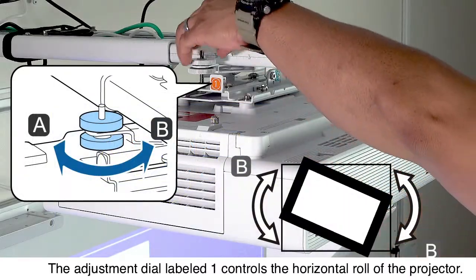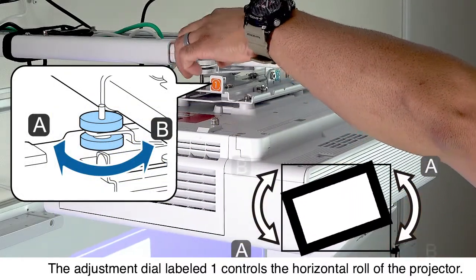The adjustment dial labeled 1 controls the horizontal roll of the projector.